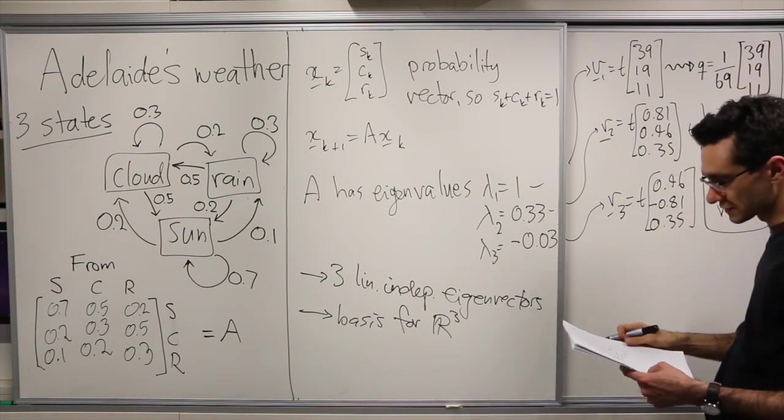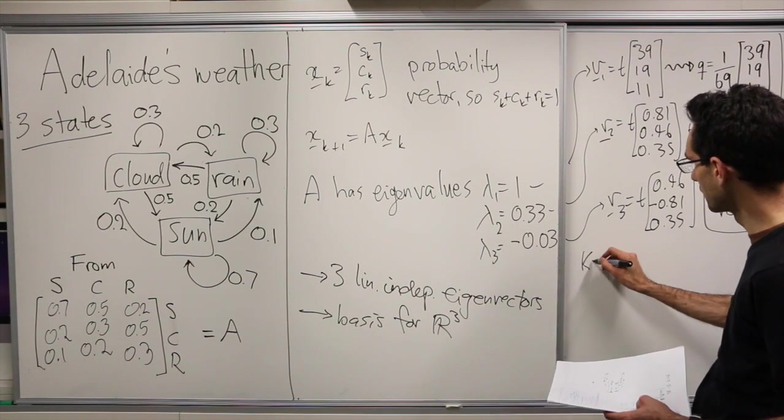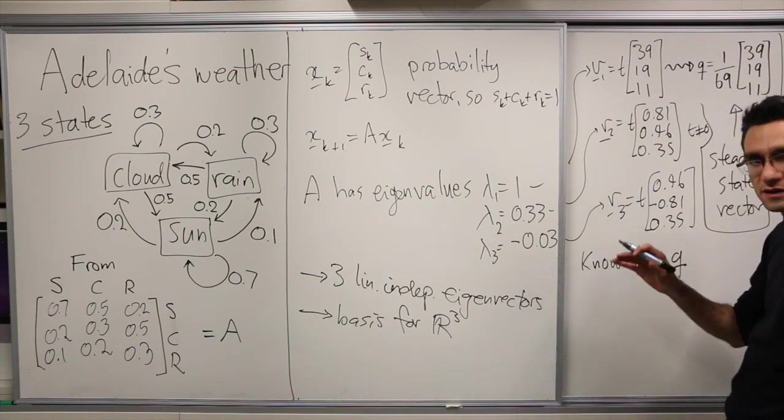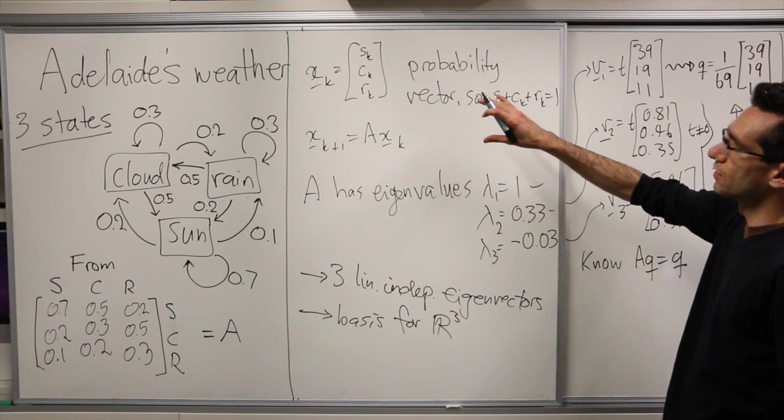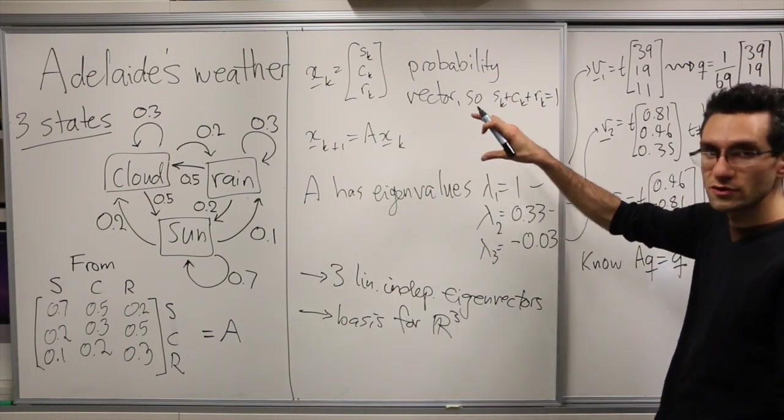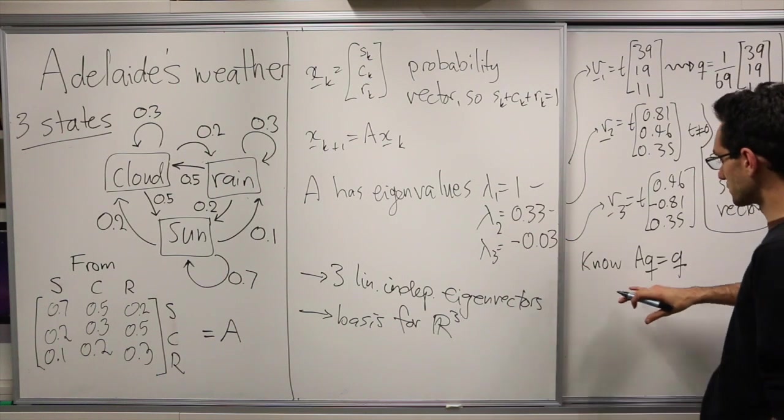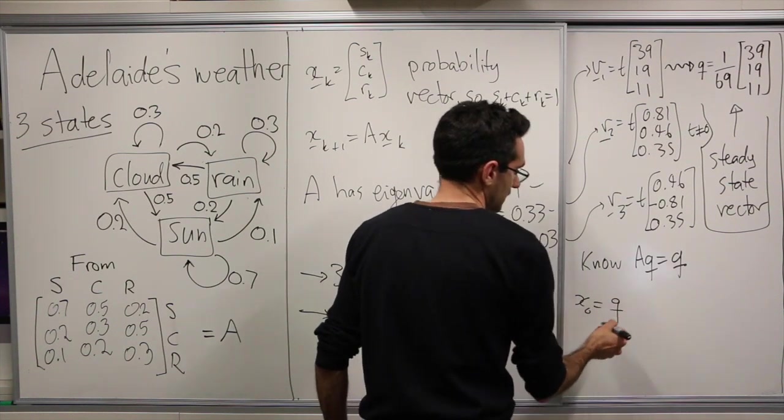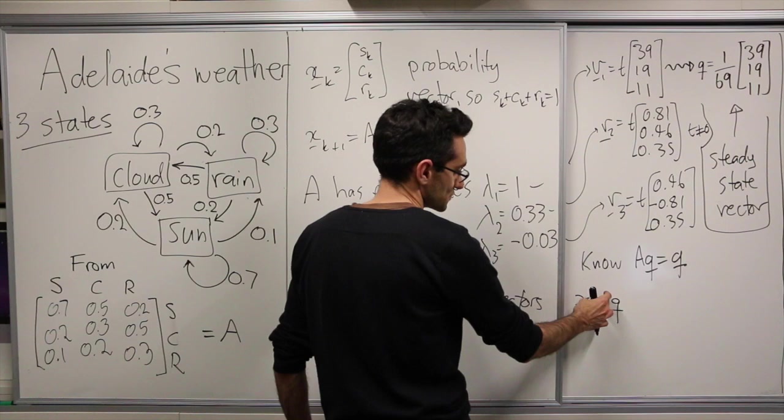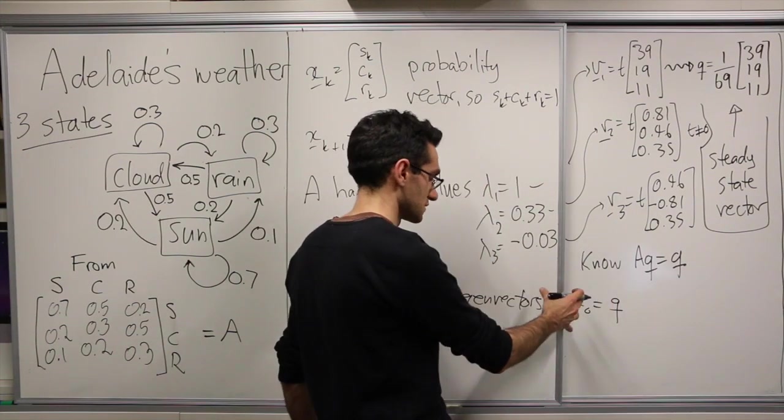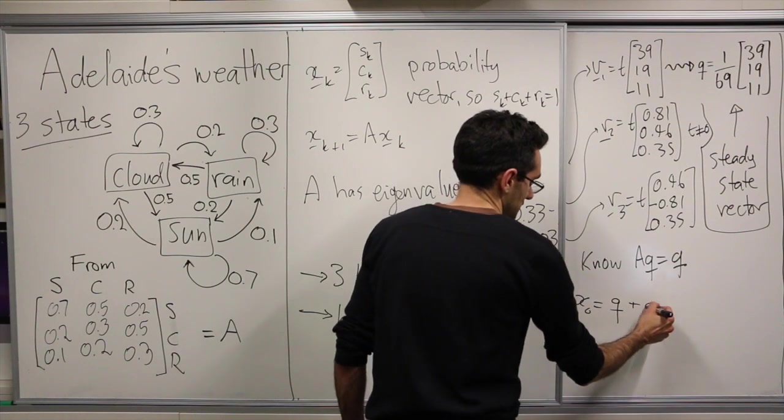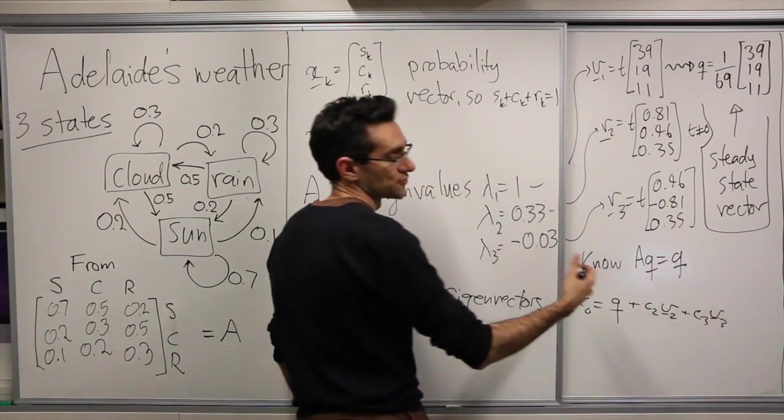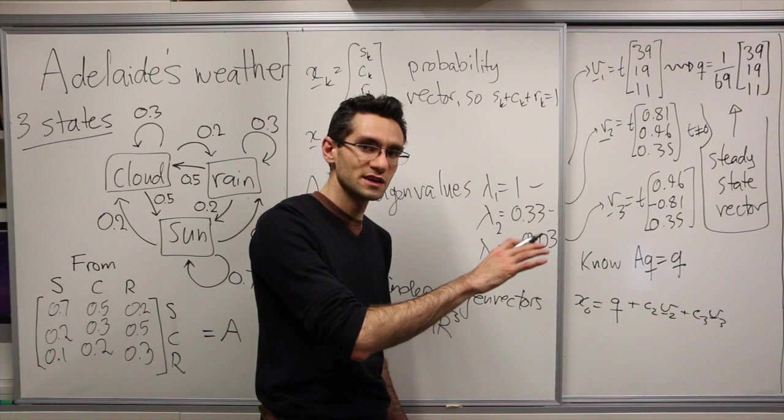So this is our steady state vector. And now we know that A times q is equal to q. And we again do a decomposition in terms of x0 in terms of eigenvectors, one of which is going to be q. So you can write x0 as q, and also we know from class that the coefficient here is going to be 1. This is very special to this particular setup, plus c2v2 plus c3v3 for some numbers c2 and c3, which are not particularly important.